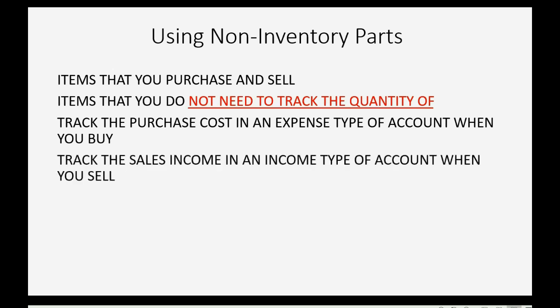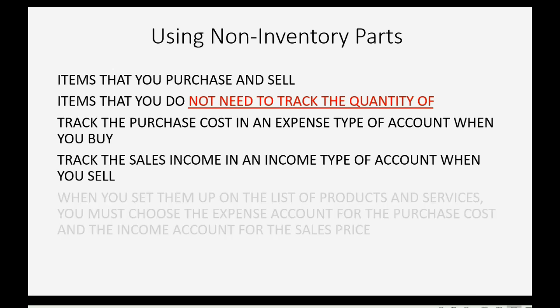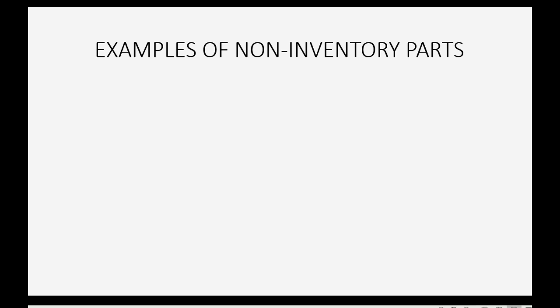You can track the sales income in an income type of account when you sell them. When you set them up on the list of products and services, you must choose the expense account for the purchase costs and the income account for the sales price.